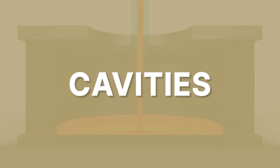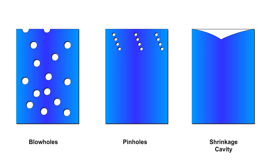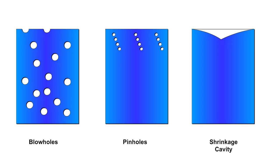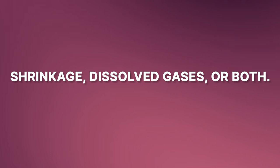Next comes the cavities, denoted by letter B. This category consists of rounded or rough internal or external cavities such as blowholes, pinholes, and shrinkage cavities. Among these, porosity is the most common defect — it comes under shrinkage cavities. Porosity is caused by shrinkage, dissolved gases, or both.